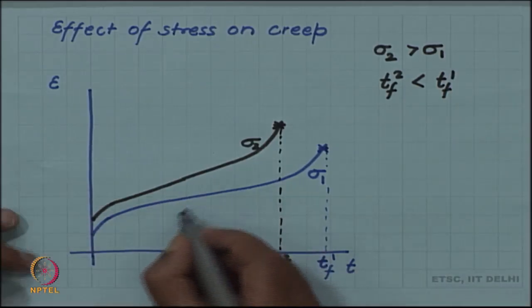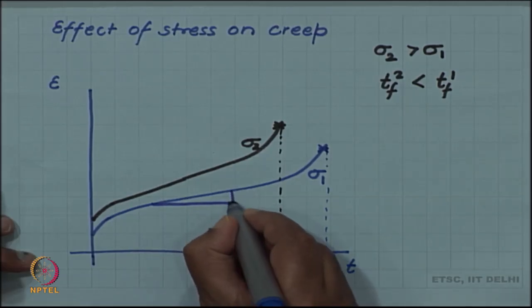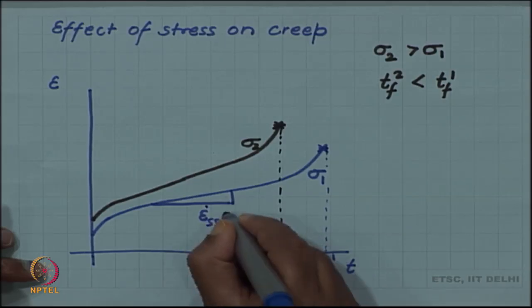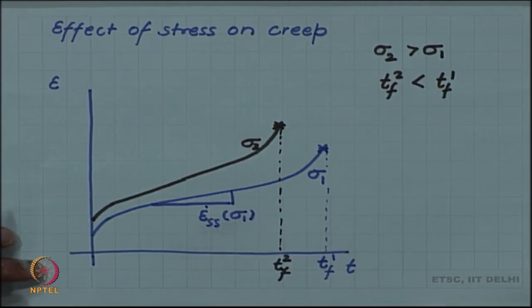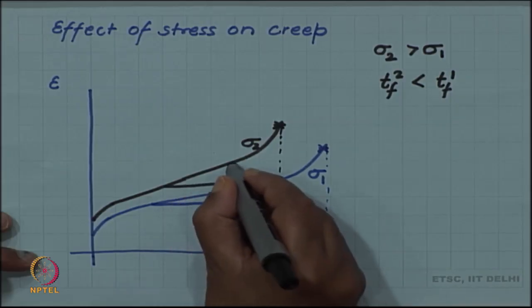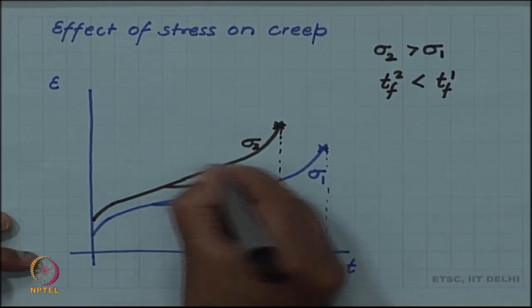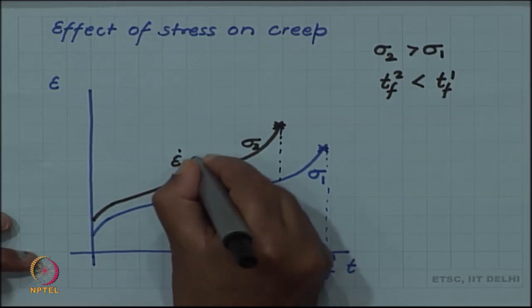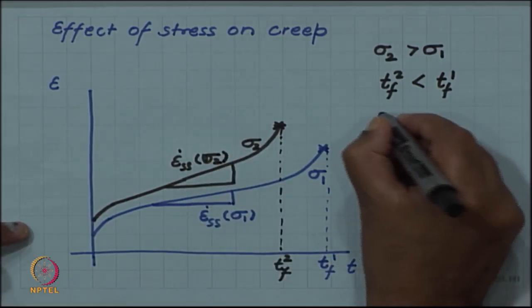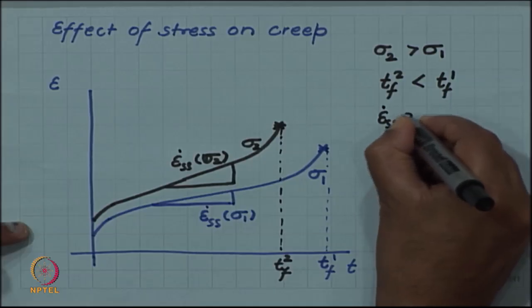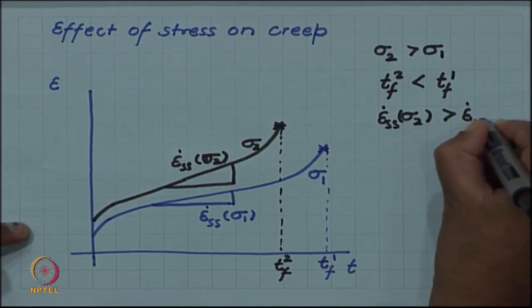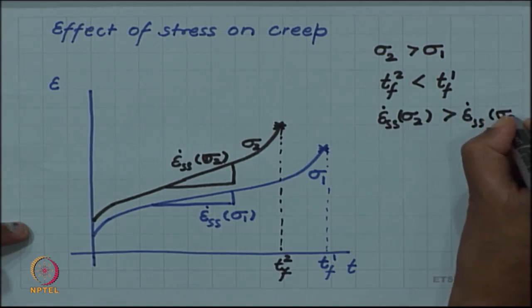But the steady state strain rate, which is the slope in the steady state regime epsilon steady state at sigma 1, this is less. With increased stress, the slope increases. This is the steady state strain rate at sigma 2.